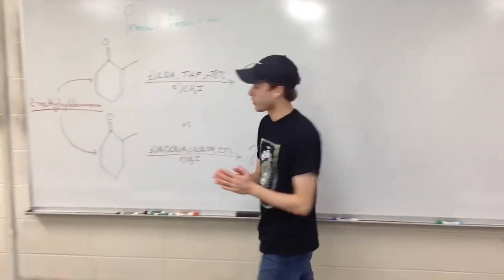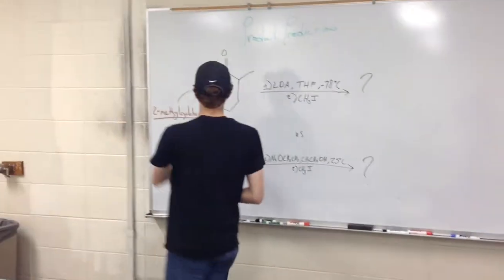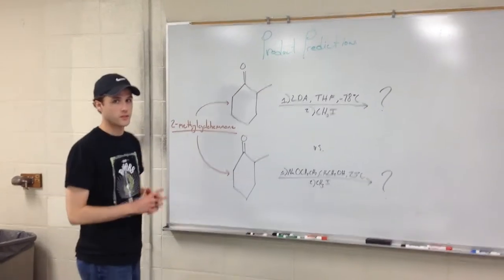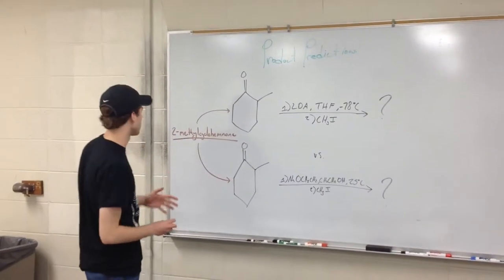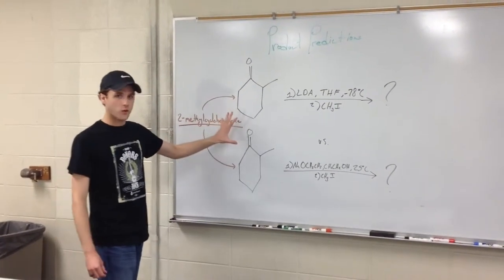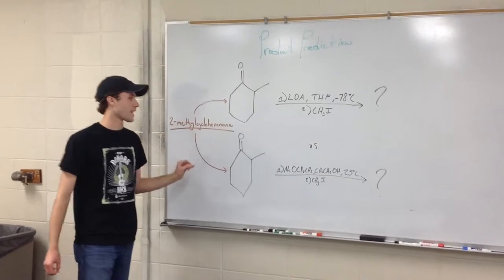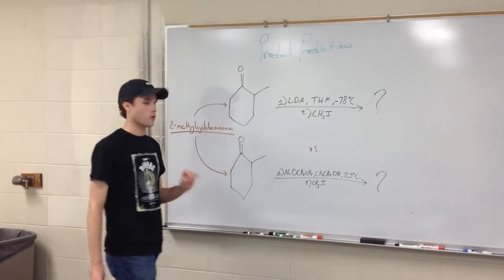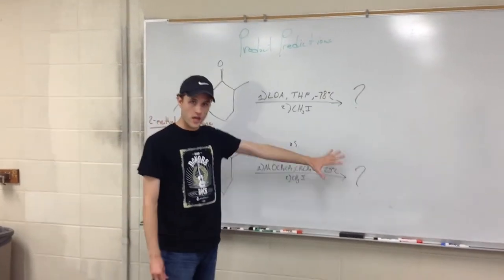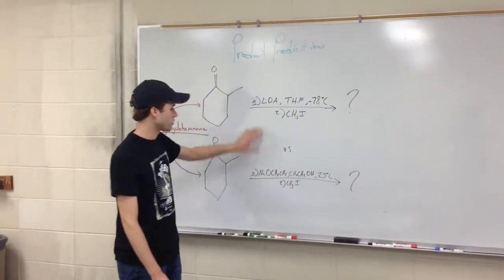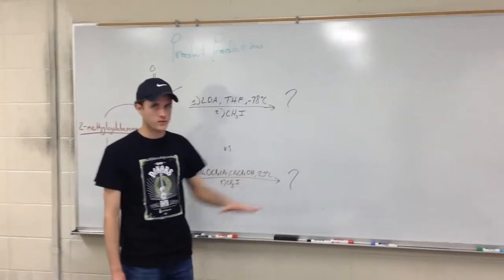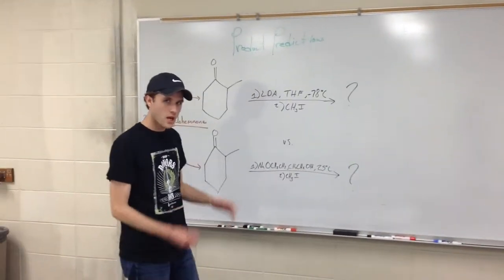I want to talk about predicting products for some pretty simple carbonyl compounds. We have some ketones here — two identical molecules, two methylcyclohexanone, that are going to undergo some reactions. We have two different sets of reagents and I want to predict the products for what's going on.